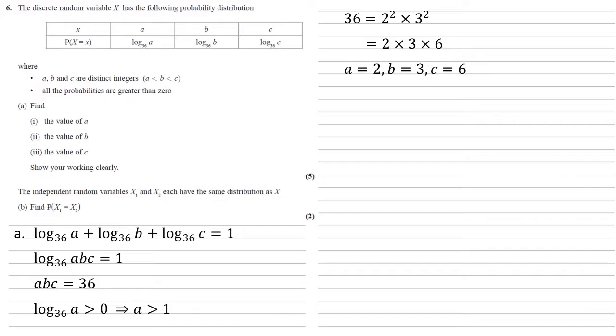The independent random variables X1 and X2 each have the same distribution as X. So in part B, we need to find the probability that X1 equals X2. If we think of two extra independent random variables, X1 and X2, their distributions are going to look the same as the table we've just been given. So the probability of A in X1 is also going to be log base 36 of 2, for B log 36 of 3, and so on.